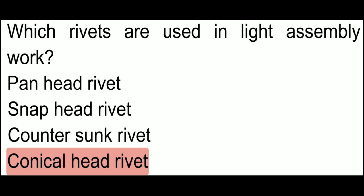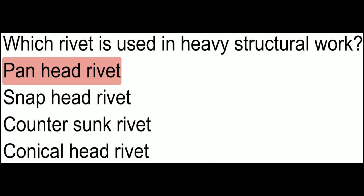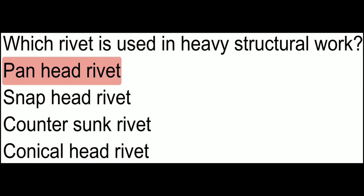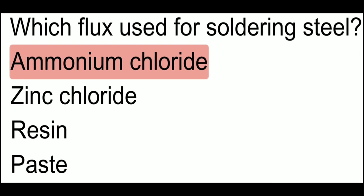Which rivets are used in light assembly work? Remember, there are two types: light and heavy assembly work. For light assembly work, the rivet used is the conical head rivet. For heavy structural work, the rivet used is the pan head rivet.